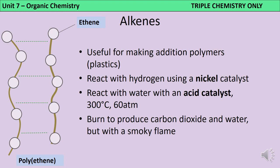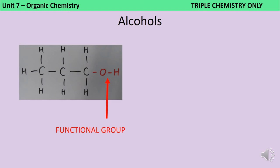You also need to know about the reactions of alkenes. They're useful for making addition polymers including important plastics like polythene, polypropene and polybutene. They can be converted back into alkanes by hydrogenation using a nickel catalyst. They also react with water with an acid catalyst at 300°C and 60 atmospheric pressures in order to make alcohols. Finally, they can be burned as fuels to produce carbon dioxide and water, but they have a smoky flame so they're less good as fuels than alkanes.